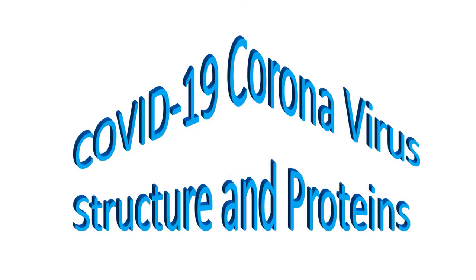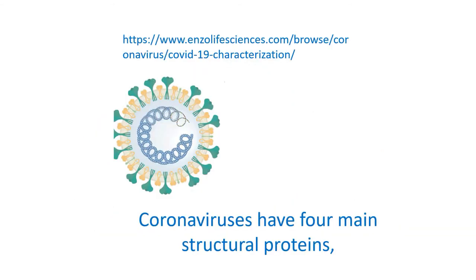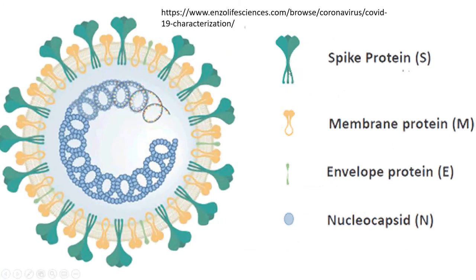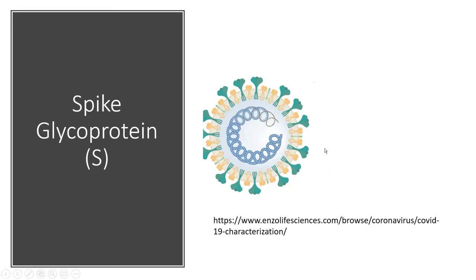Now let's talk about COVID-19 coronavirus structure and proteins. COVID-19 coronavirus has four main structural proteins: spike protein S, membrane protein M, envelope protein E, and nucleocapsid N protein. The spike glycoprotein S is the green one visible in the structure diagram.